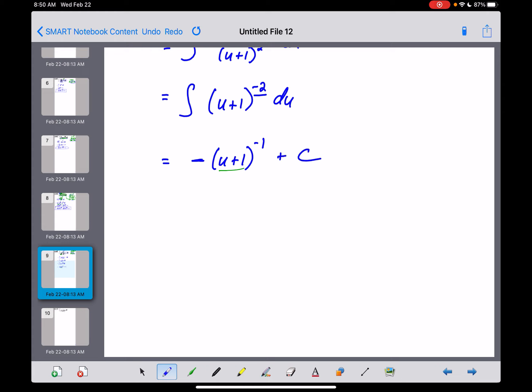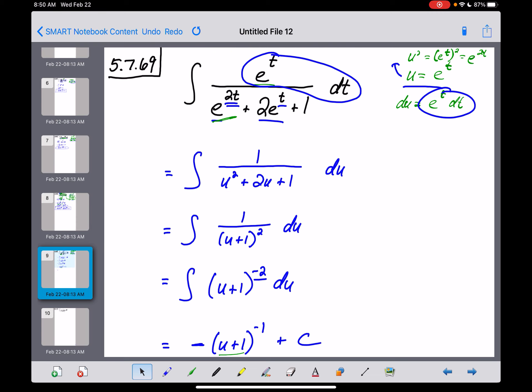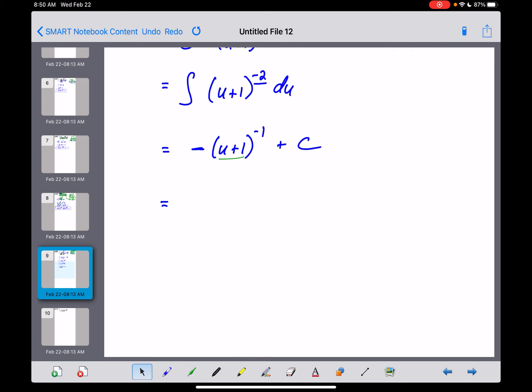Let's stick a plus c at the end of all that, and then let's unsubstitute or resubstitute. And I believe we just had u equaling e to the t power right there. Yeah, u is equal to e to the t. So let's do that. We've got the opposite now of u was e to the t plus 1 to the negative first power plus c.